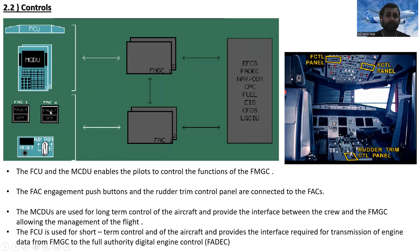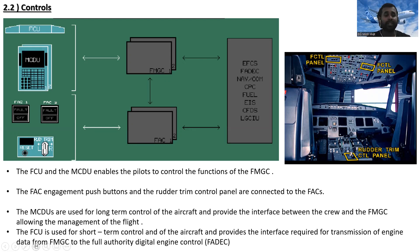The MCDUs are used for long-term control of the aircraft and provide the interface between the crew and the FMGCs, allowing management of the flight. The flight control unit is used for short-term control of the aircraft and provides the interface required for transmission of engine data from the FMGCs to the full authority digital engine control — FADEC.